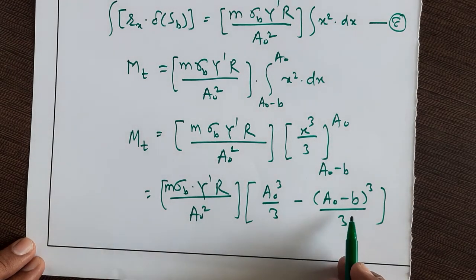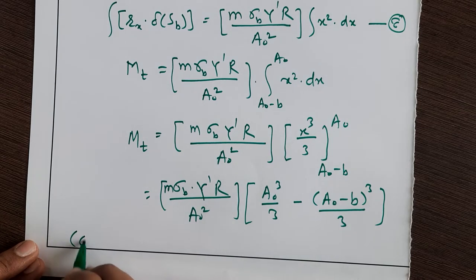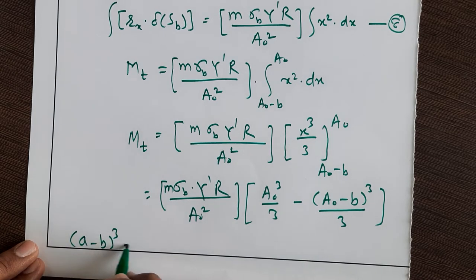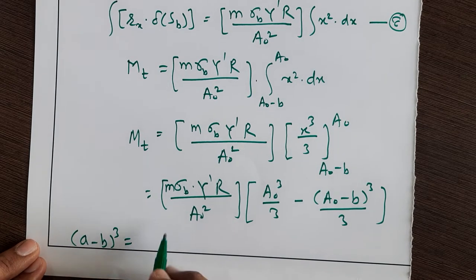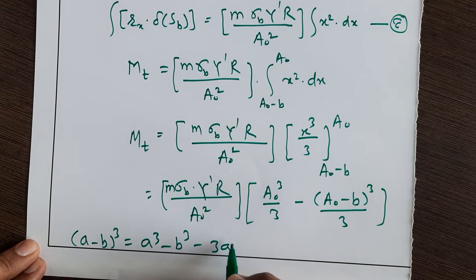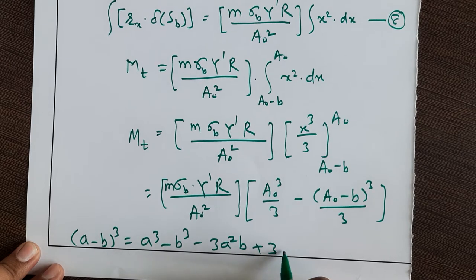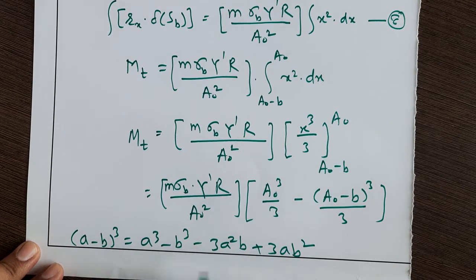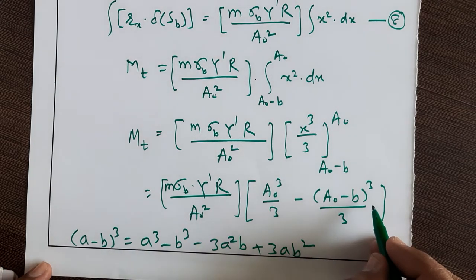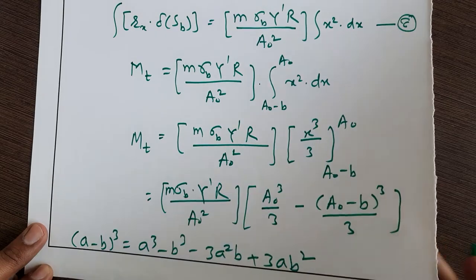We have the formula: (a - b)³ = a³ - b³ - 3a²b + 3ab². This is a general formula we are familiar with, and we will use this formula to open this bracket.